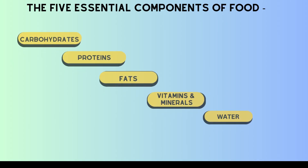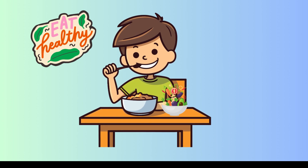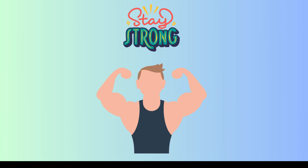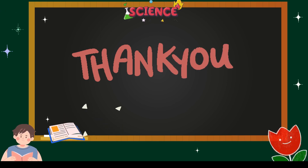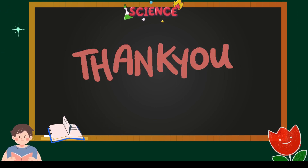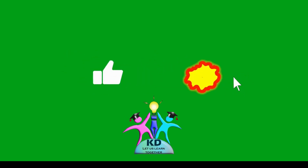So there you have it — the five essential components of food: carbohydrates, proteins, fats, vitamins and minerals, and water. They work together like a team to keep us strong and healthy. It's important to ensure that you get the right amount of each of these components in your daily diet to support your body's needs. Thanks for watching. If you enjoyed this video, don't forget to like and subscribe to KD Creatives for more exciting educational content.